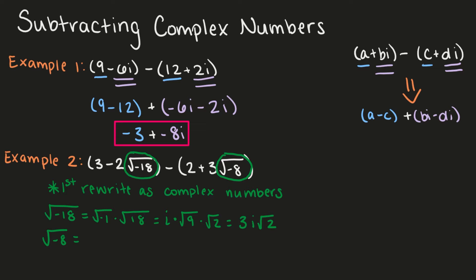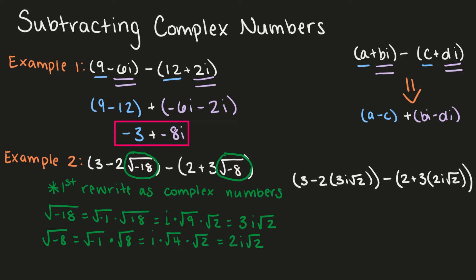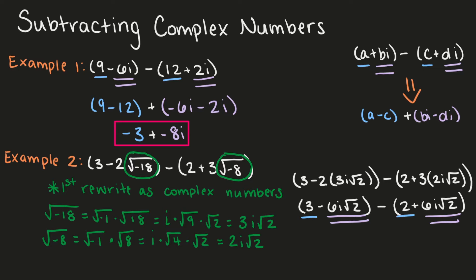The square root of negative 8 can be written as the square root of negative 1 times the square root of 8, which is i times the square root of 4 — a perfect square — times the square root of 2, which becomes 2i square root of 2. Rewriting our expressions gives us 3 minus 6i square root 2 minus 2 plus 6i square root 2. 3 and 2 are like terms, and negative 6i square root 2 and 6i square root 2 are also like terms. Subtracting our like terms gives us a final answer of 1 plus negative 12i square root 2.